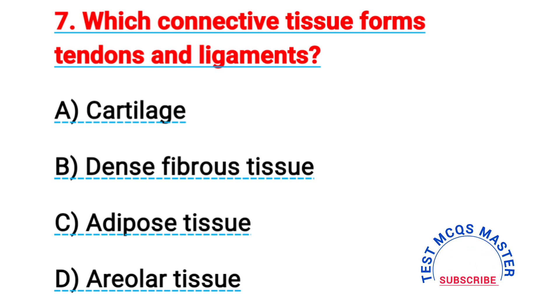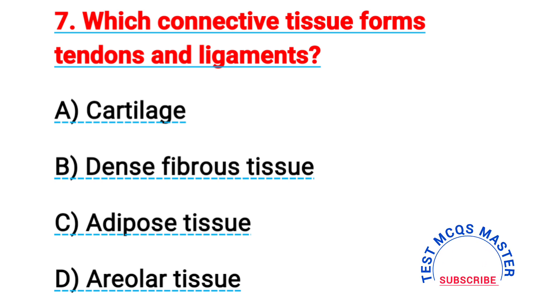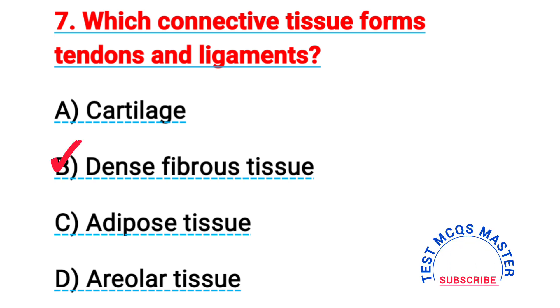Question number seven: which connective tissue forms tendons and ligaments? The right answer is B, dense fibrous tissue.